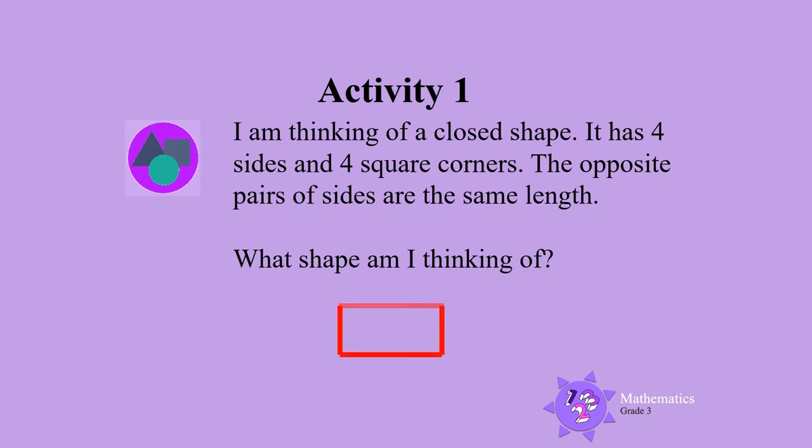One, two, three, four. And it has four square corners. So what is this shape called? It is a rectangle.